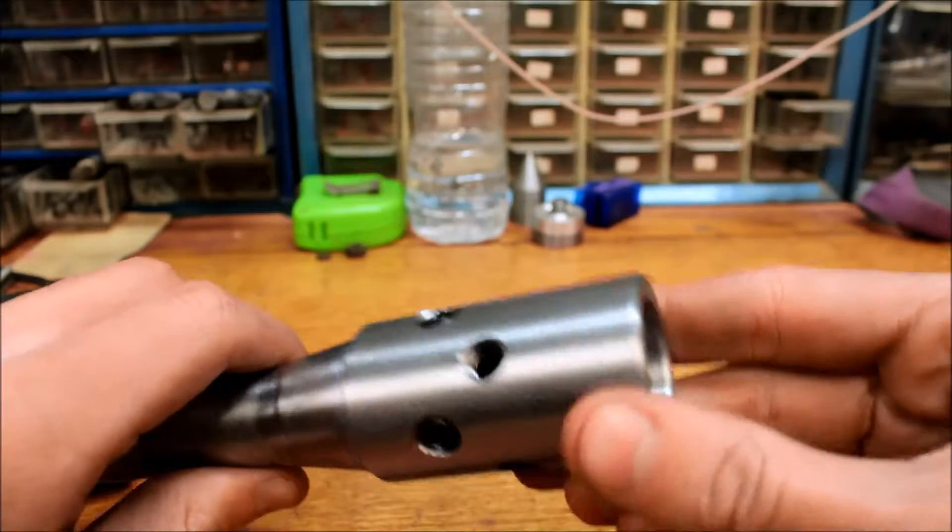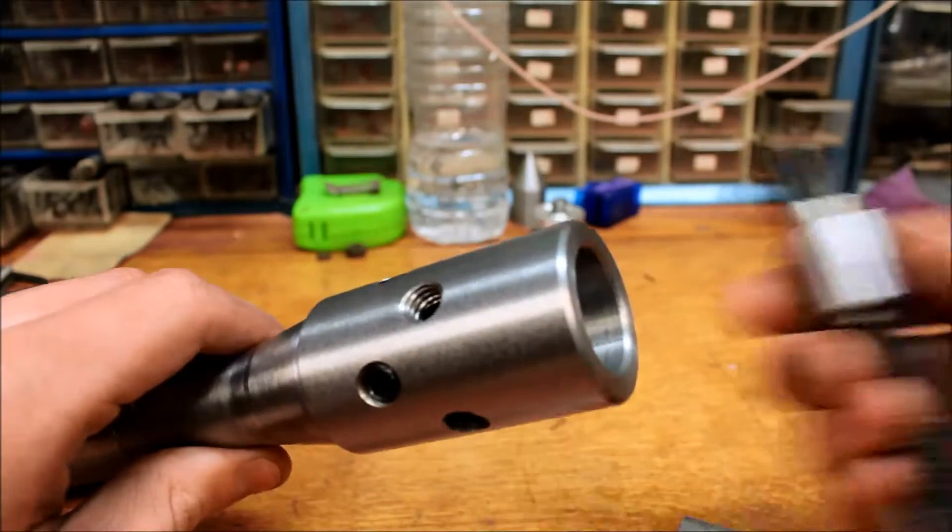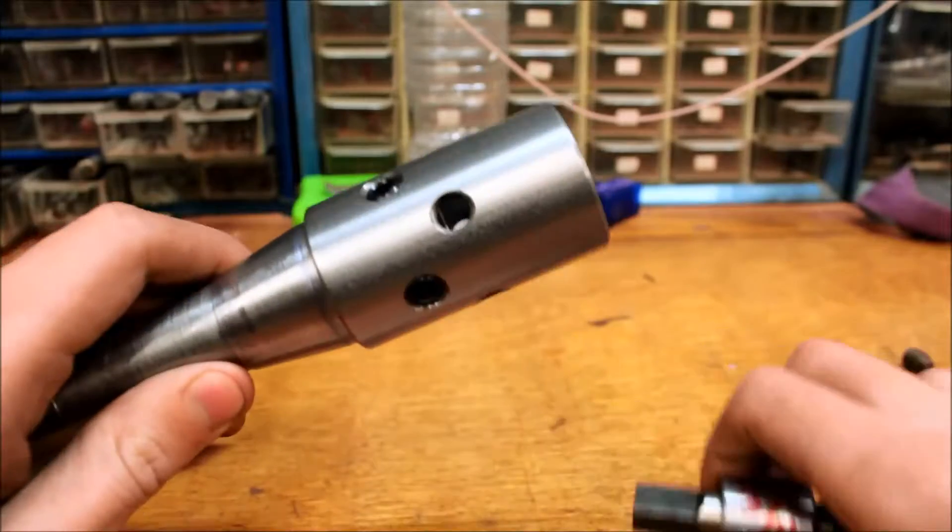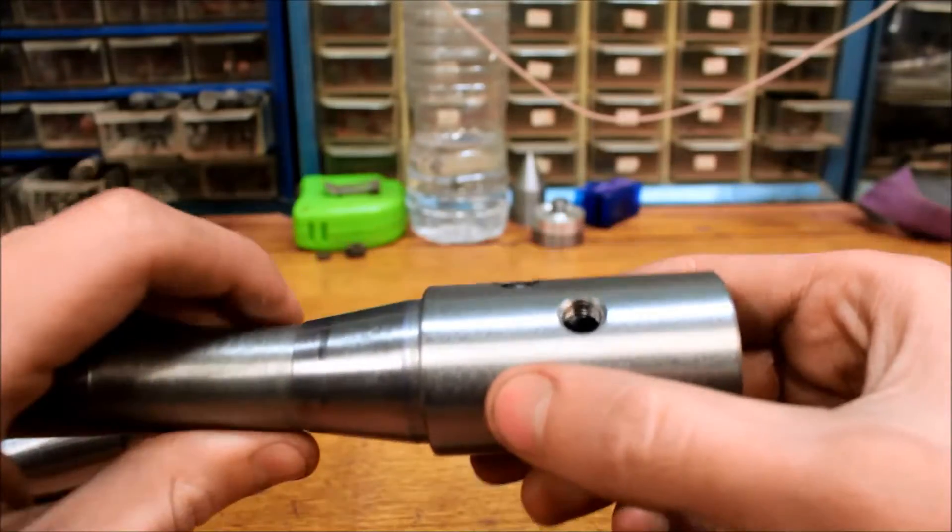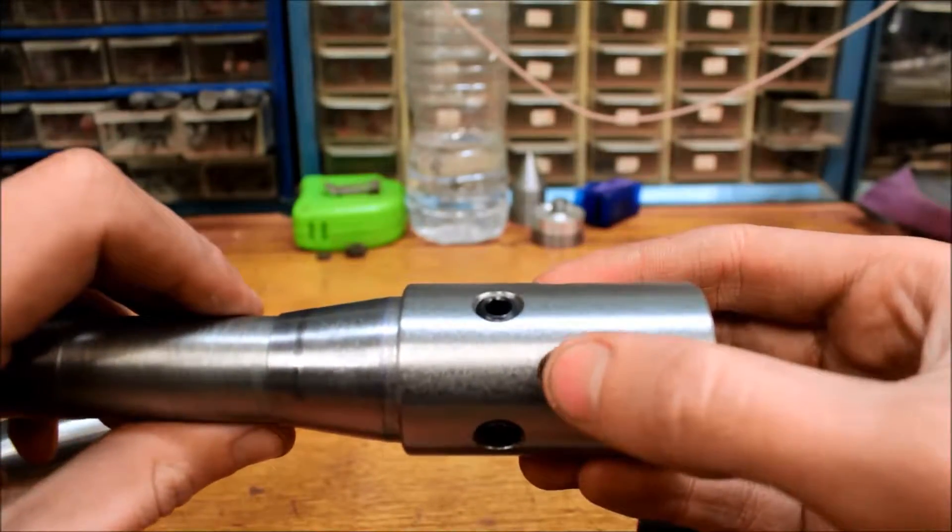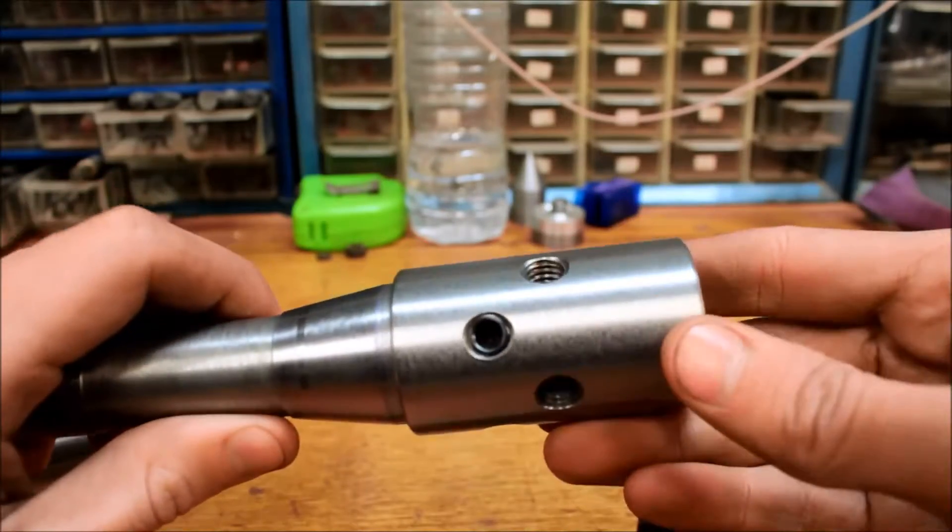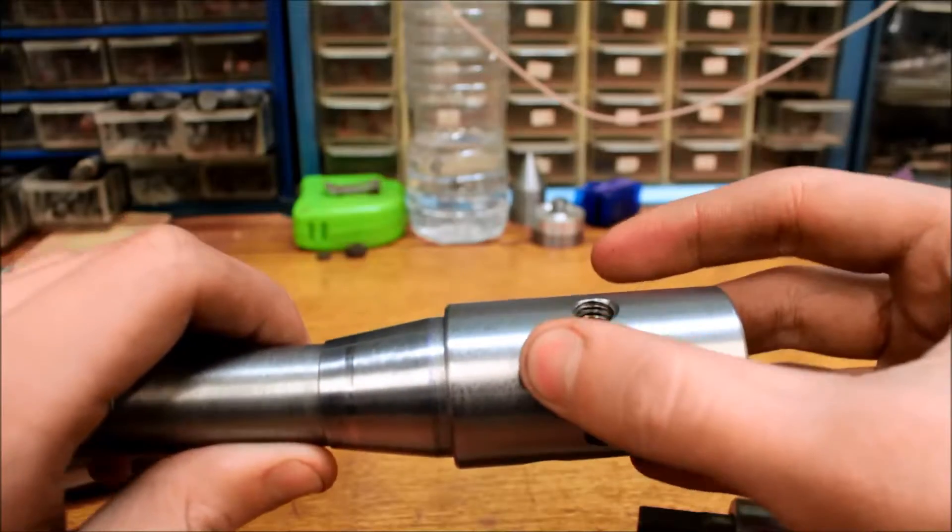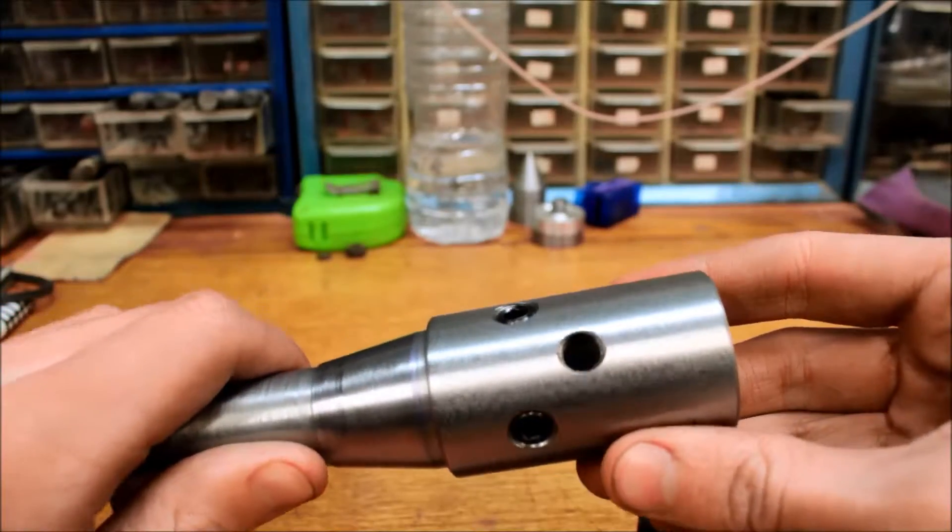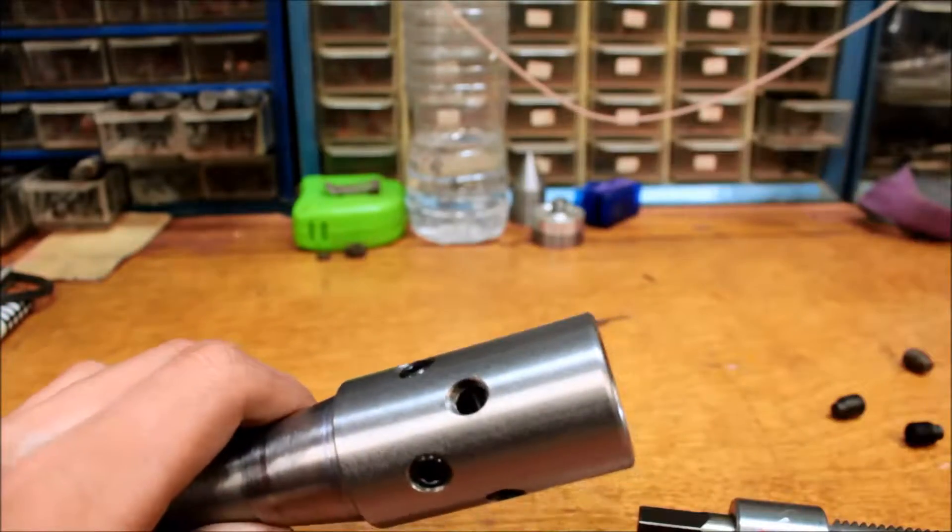The taps are held in place with one of these bushings. I've got two sets of set screws, each one at 45 degrees shifted, so this one's for shorter taps and this one's for longer taps. So let's throw a tap in there.